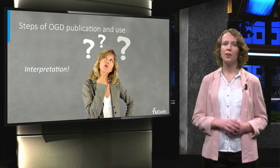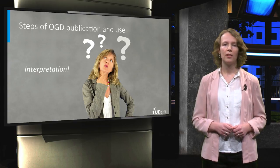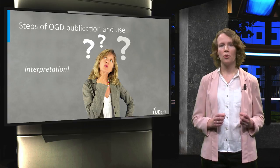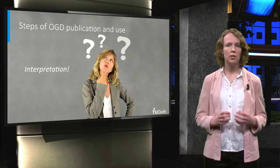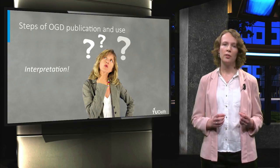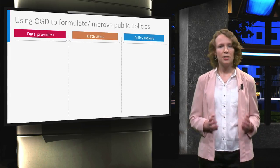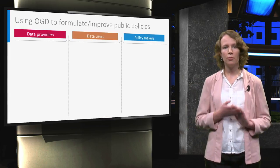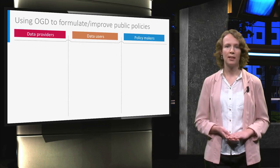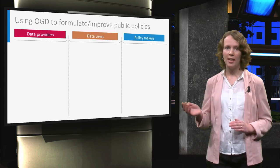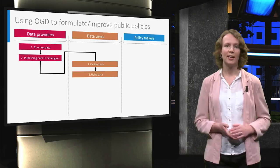Data interpretation is very important for each of these steps of open data use. For instance, in order to analyze or combine open data sets, the user needs to be able to interpret the data and to understand the context in which it has been created. In sum, we just explored the first four steps of the process of using open data for public policymaking, namely creating data, publishing data, finding data and using data.